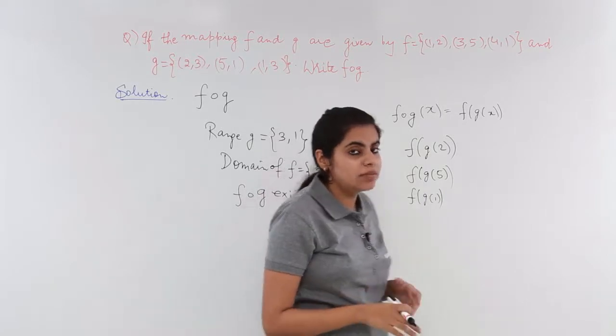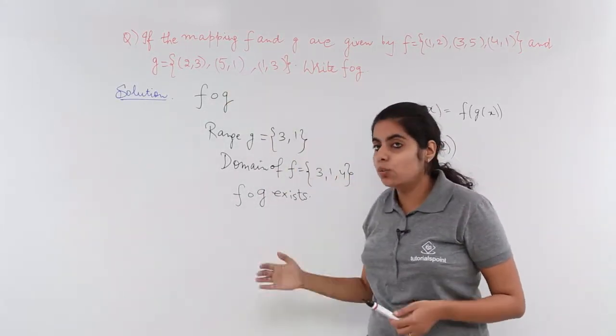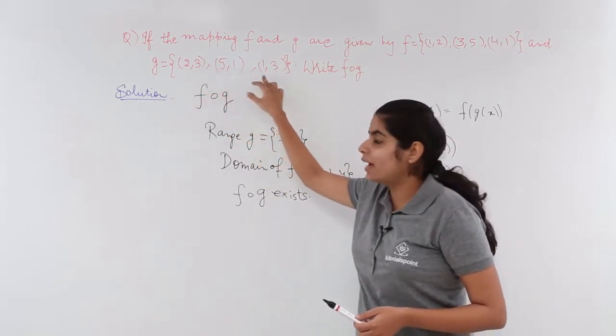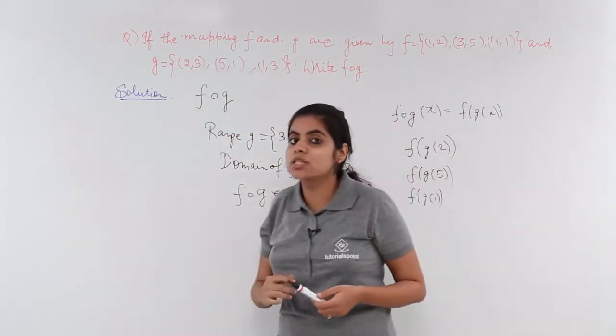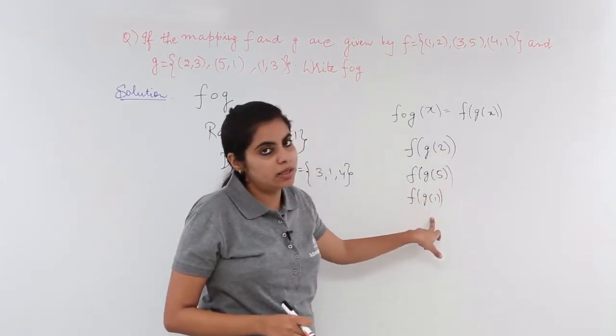I repeat it again. How did we do this? We actually saw the G function. The domain was 2, 5 and 1 and since the domain was 2, 5 and 1 we kept on doing it in this manner stepwise.